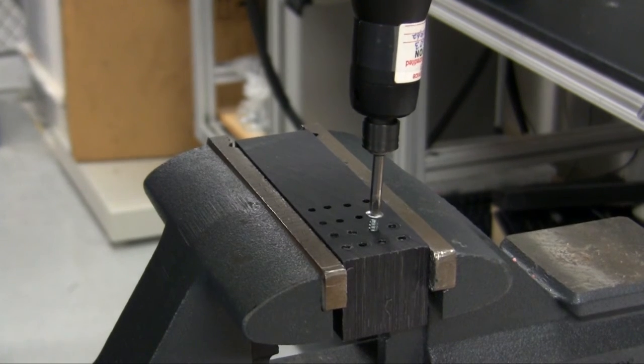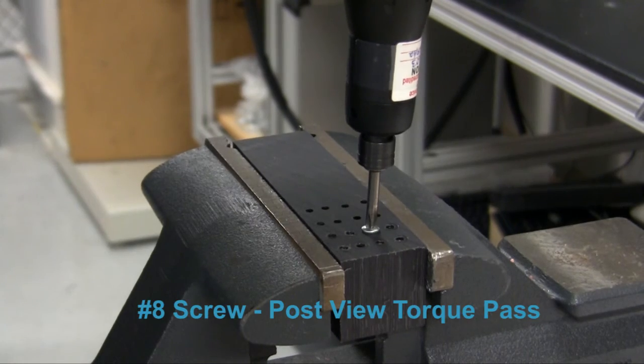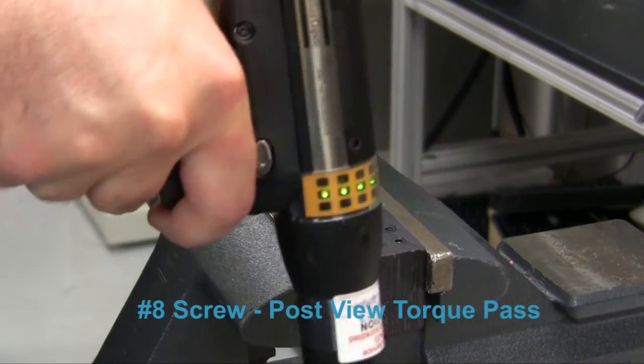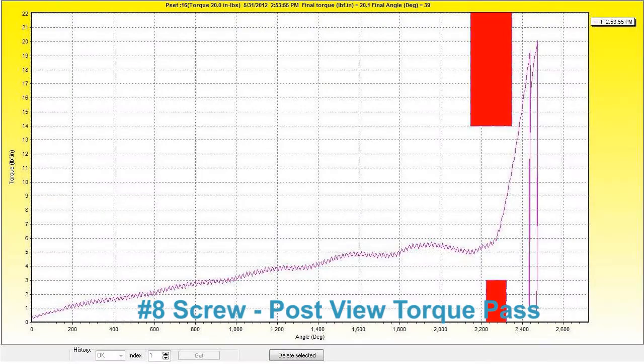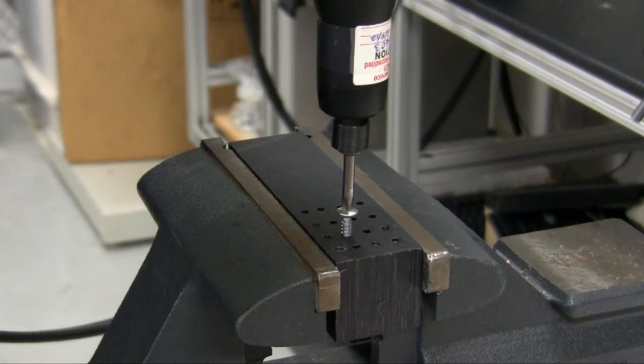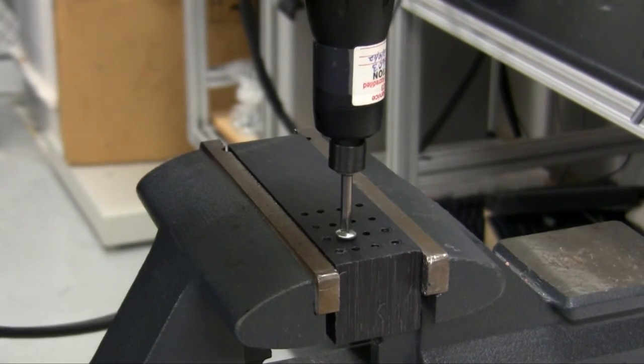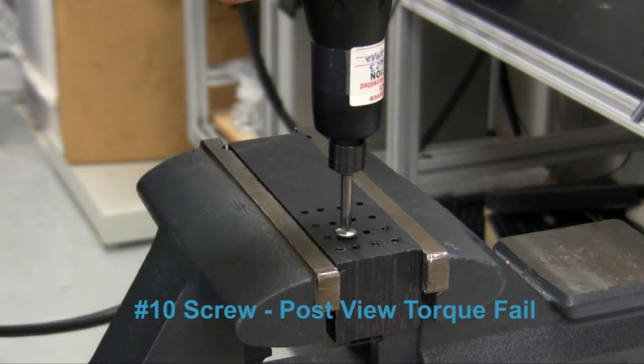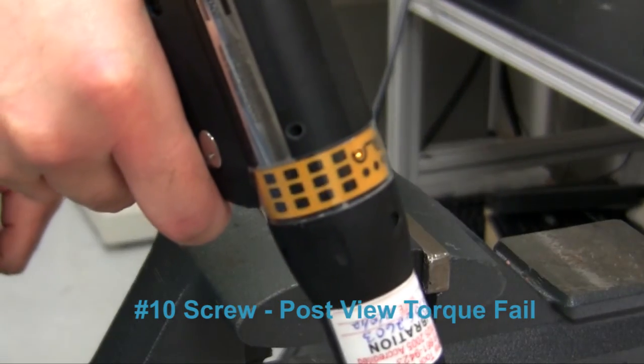Now we'll add post-view torque to the fastening strategy. With the smaller screw, the curve passes between the min and max post-view limits. When running the larger screw, it is detected by the post-view max torque window and the fastening is ended with a post-view failure.